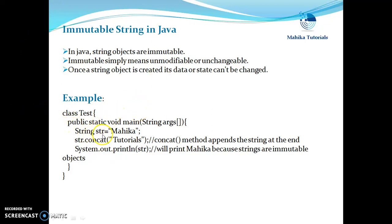Let's take an example. Suppose we create a string object with the content "Micah" and then call the concat method on that object. The job of this concat method is to append a string at the end — that is, it performs concatenation. So we want "tutorials" to be appended at the end of the string "Micah", so we say str.concat and pass "tutorials" as the parameter. Now when we try to print the value of str, it will print "Micah" only — it will not print "Micah tutorials".